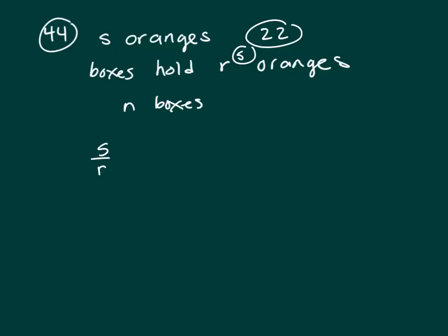that are filled. And we could stop right there because there's only one answer that has s over r. But s over r is the number of boxes that are filled; you subtract n, which will be the number of boxes